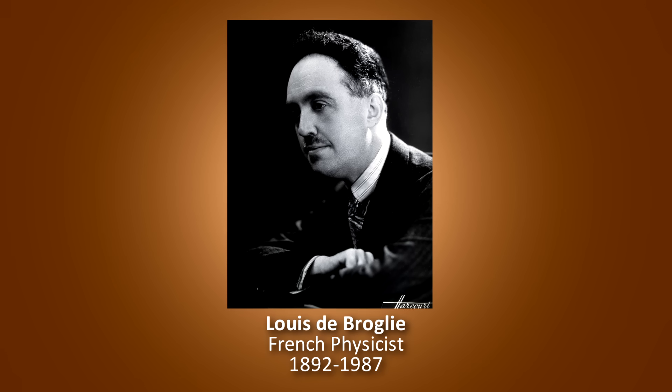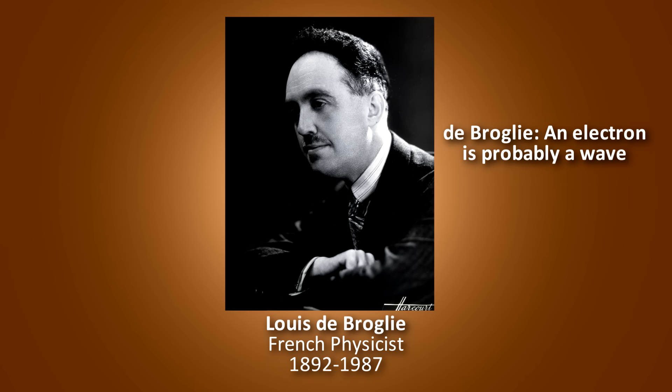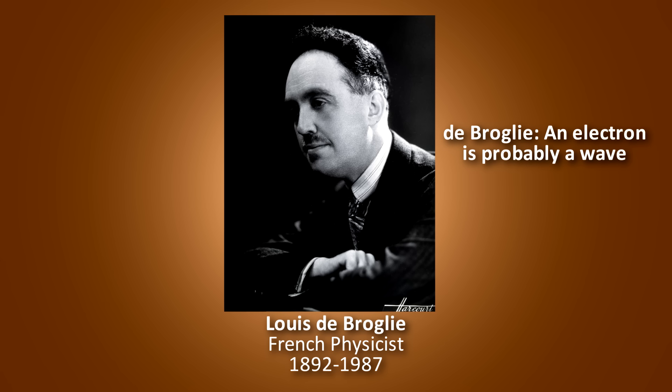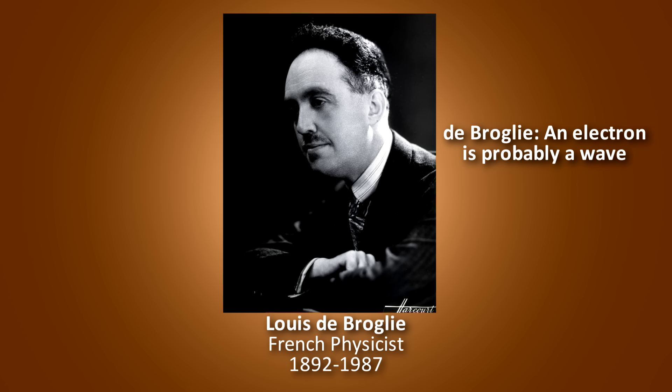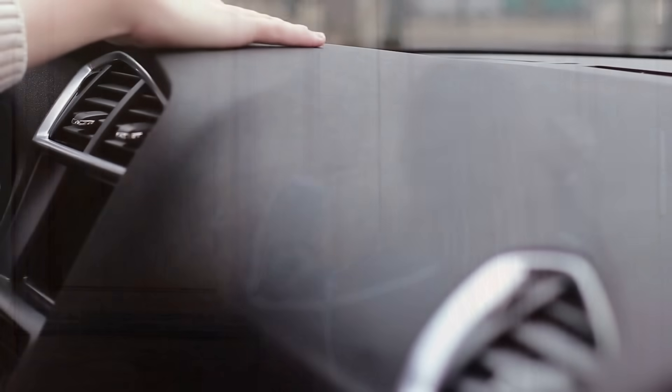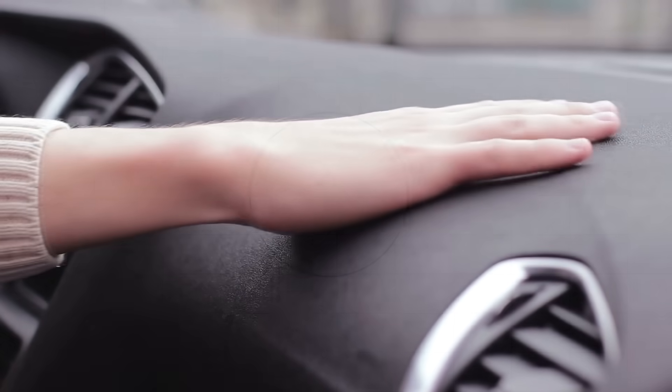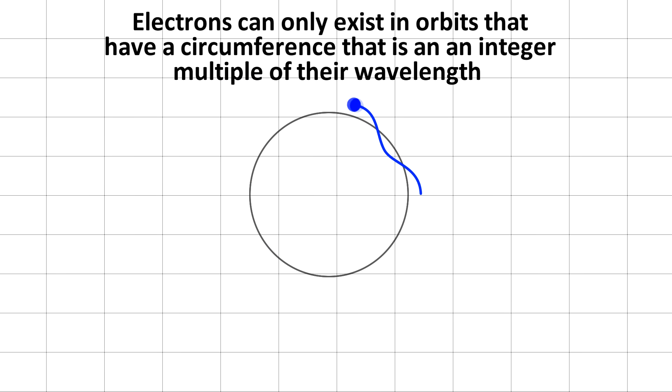Then, along came a brilliant French scientist by the name of Louis de Broglie. He said, look, if a particle has a momentum, and it has a wavelength associated with it because of Planck's constant, then an electron is probably a wave. This required a huge philosophical leap, because here was a guy suggesting that solid matter, things that we can see and feel on a macro scale was composed of waves. Matter was somehow a particle and wave at the same time.